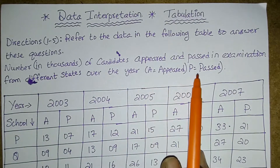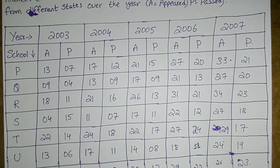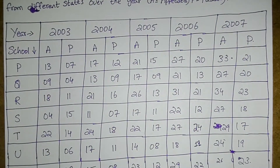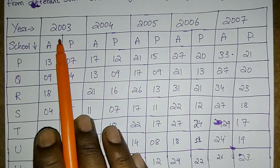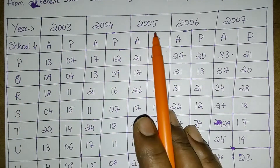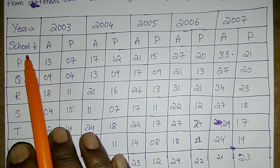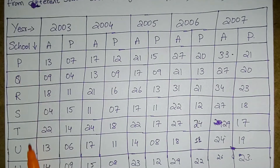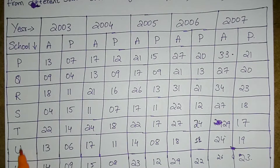A represents appeared, P represents passed. The years given are 2003, 2004, 2005, 2006, and 2007. These alphabets represent the school — P, Q, R, S, T, U, W.